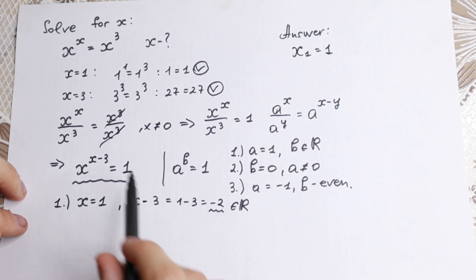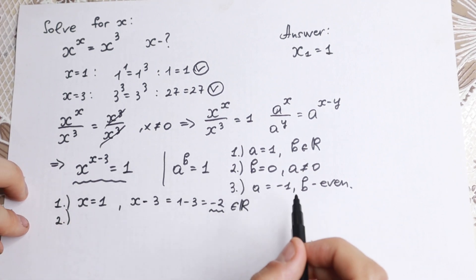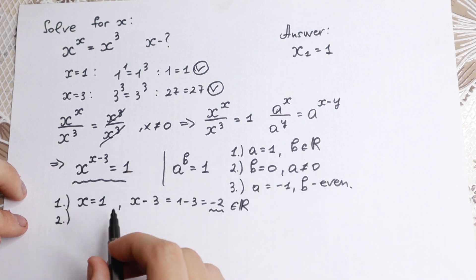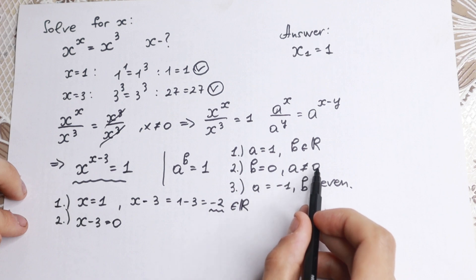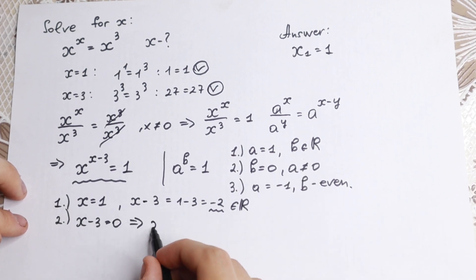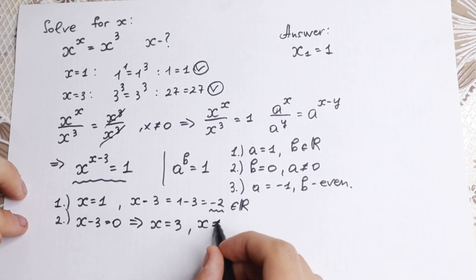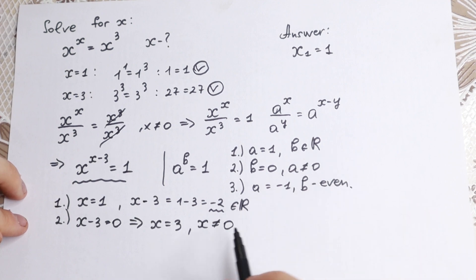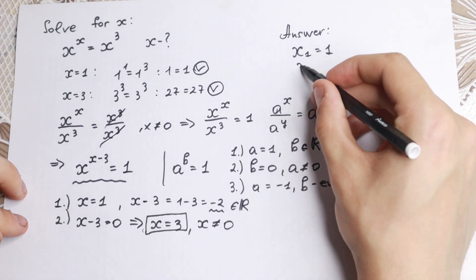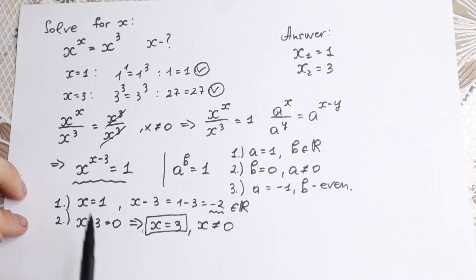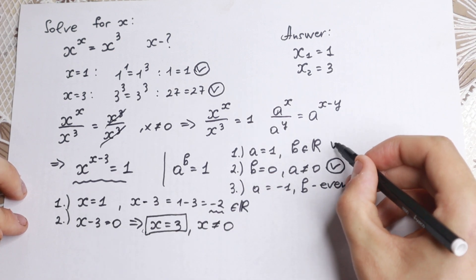For the second case, b equals 0, meaning x minus 3 equals 0, so x equals 3. Our base x equals 3 is not equal to 0, so this rule applies. We have proven our second answer: x₂ equals 3, which we also found by inspection at the beginning.